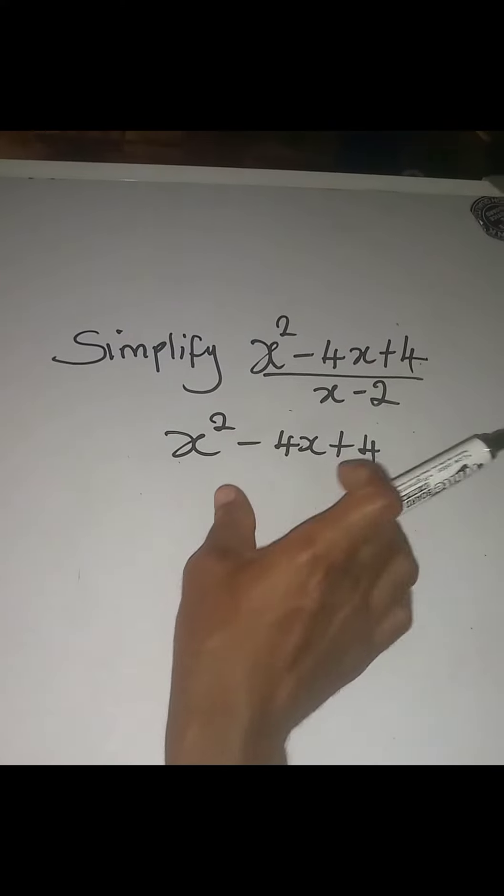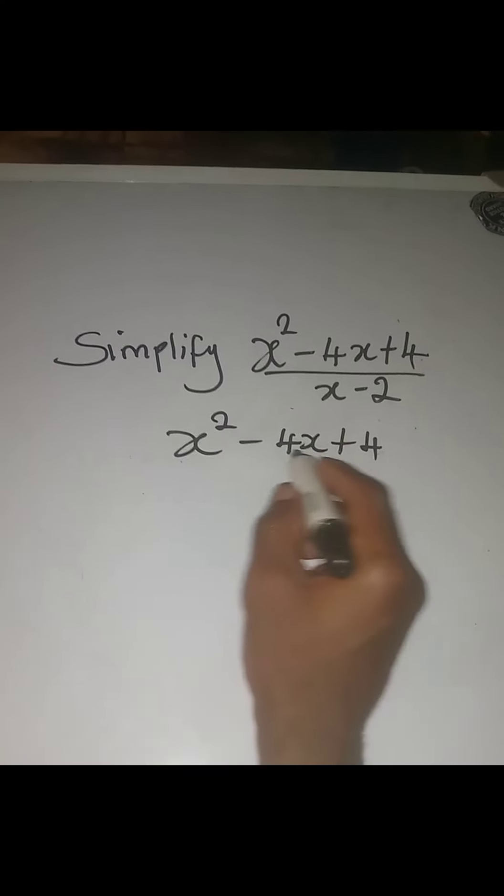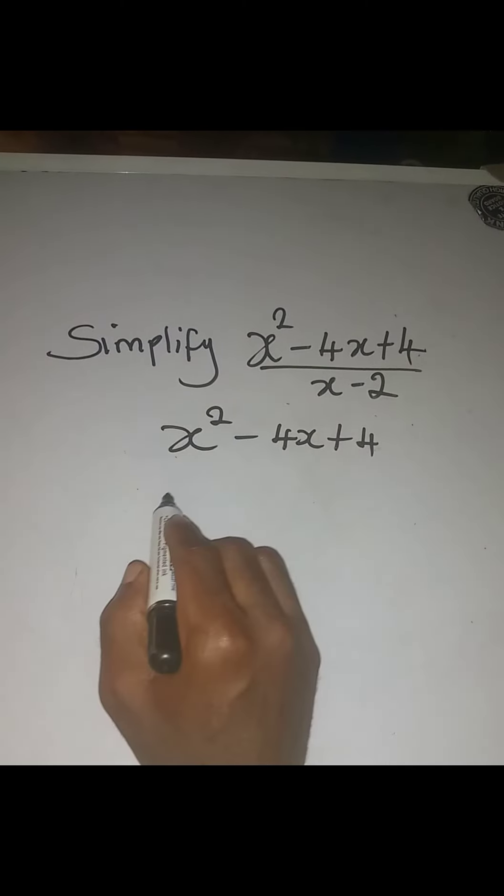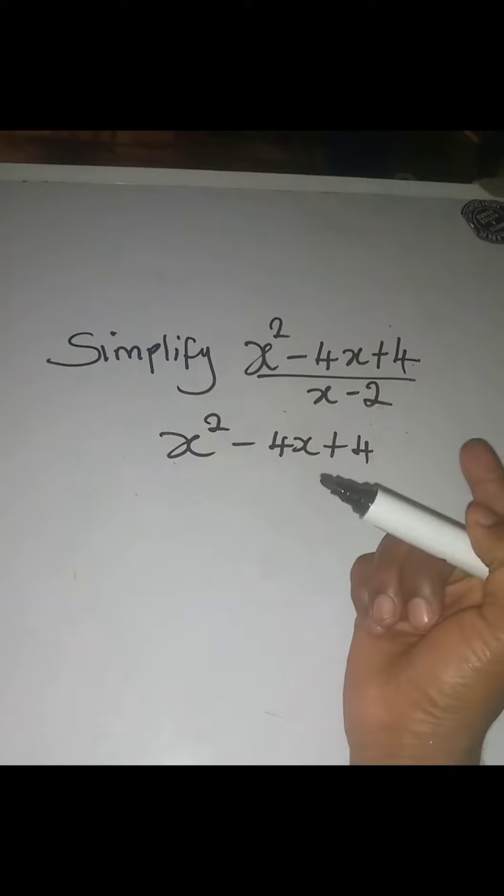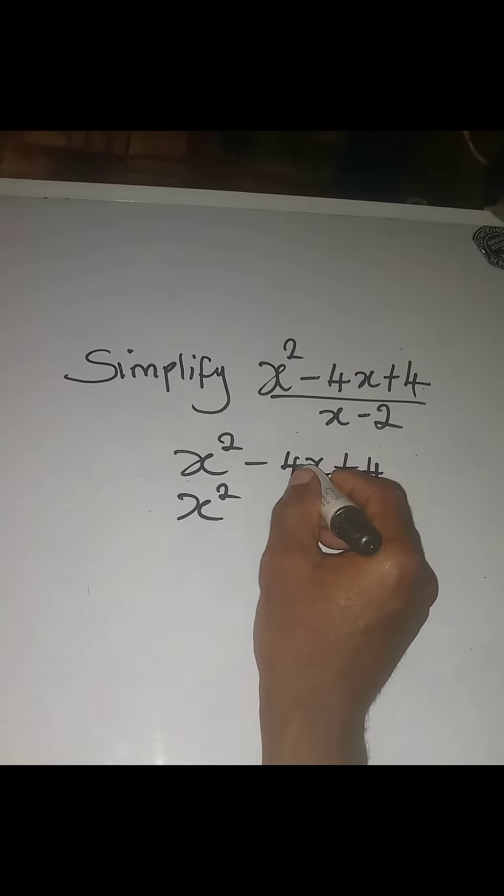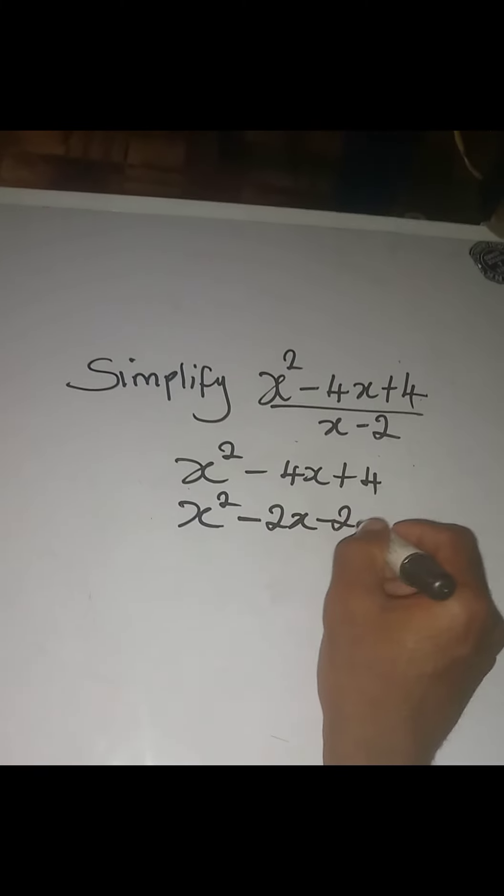We can factorize this because there are two numbers we can multiply to get 4, and when we add them together we get -4. The two numbers are -2 and -2. So I can break it down this way: instead of -4x, I'm going to write -2x - 2x, and plus 4.